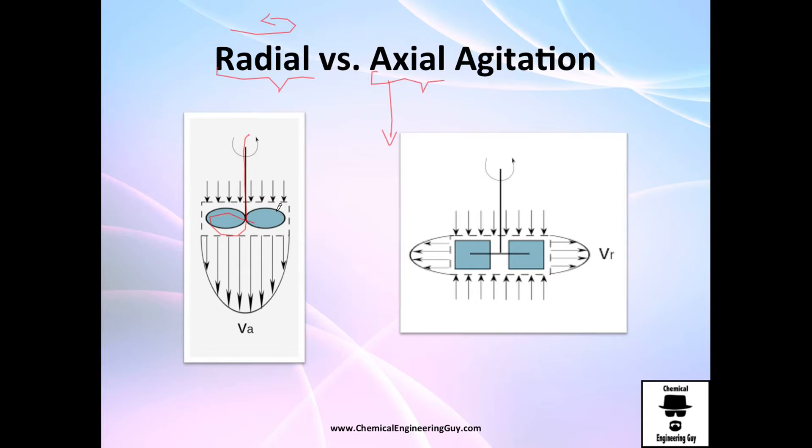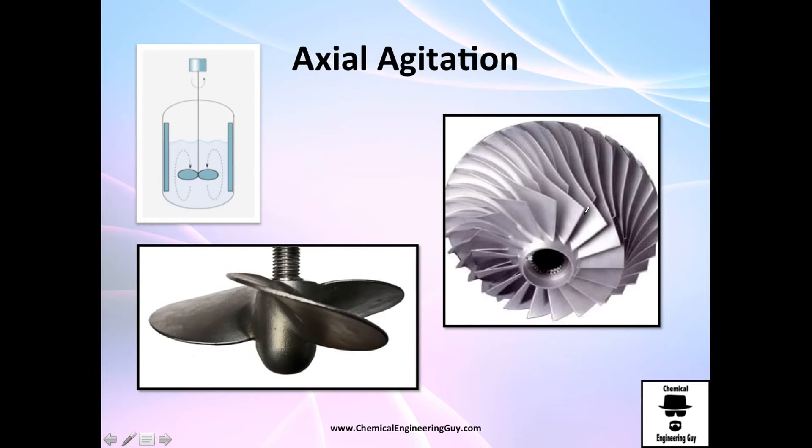When we have the propeller right here and we move it, we're going to have axial flow. If we rotate it this way, we're going to have radial flow. So you have here VA is axial and VR is radial.